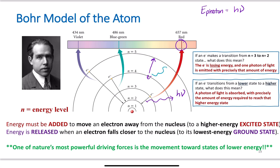In order for absorption to happen, a photon has to travel directly to this electron with the correct amount of energy to excite it from n equals 4 to n equals 5. Energy must be added to move an electron away from the nucleus into a higher excited energy state. Energy is released when an electron falls closer to the nucleus, because it's falling from an excited state back down to its ground state — the closer it is to the nucleus, the closer it is to its ground state.